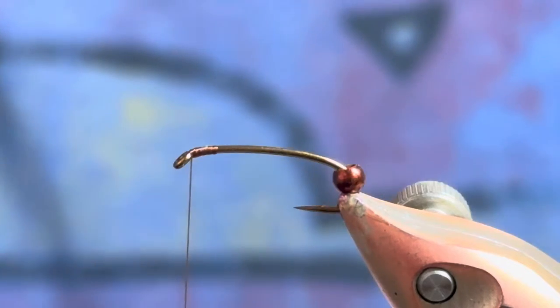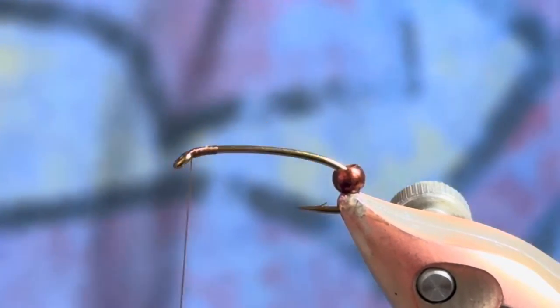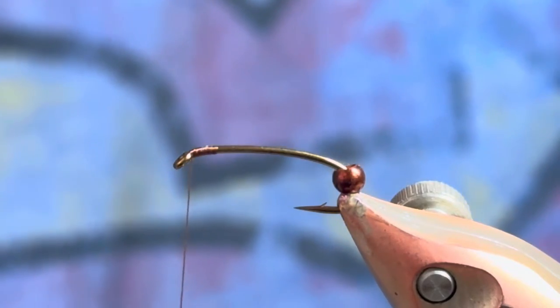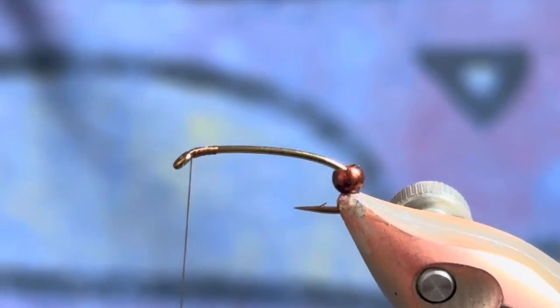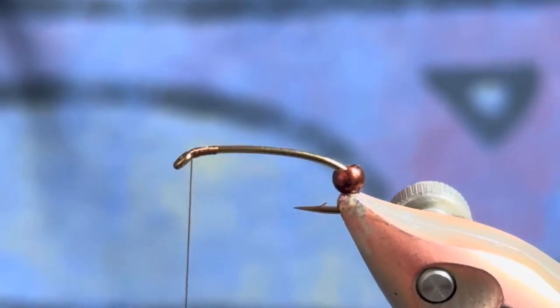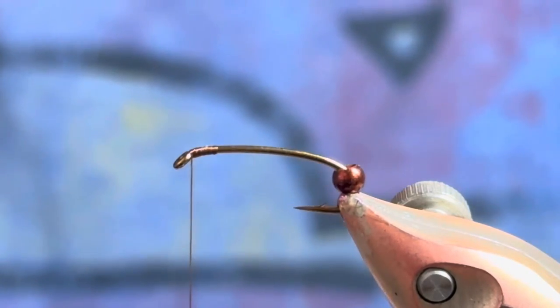The old school is kind of the thorax area of this pattern and the new school is the body. So it's a neat combo, just gives the fish a little something different to look at.